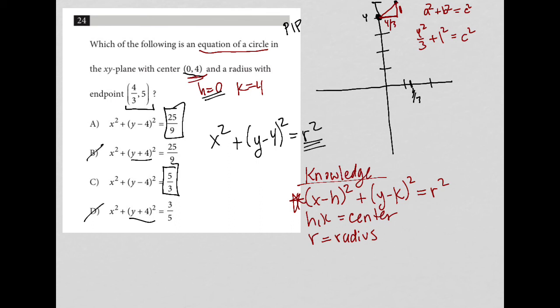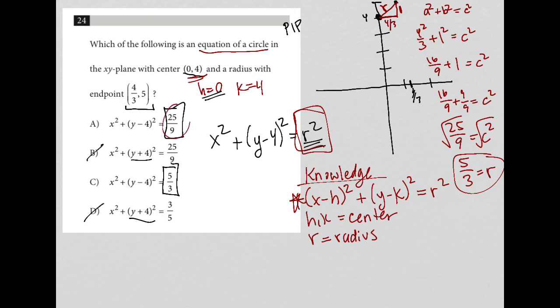When I do the Pythagorean theorem on this, I find that (4/3)² equals 16/9. Plus 1², which is 1, equals c². I get 16/9 + 9/9, because I need to have a common denominator, which leads me to 25/9 = c². And therefore, since c is really my radius, I would say I can square root both sides and it's 5/3 = r. But don't forget, we want r², so I just keep it at 25/9, which means the right answer here is choice A.